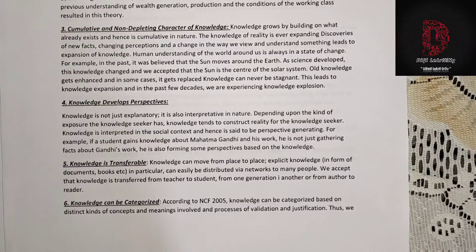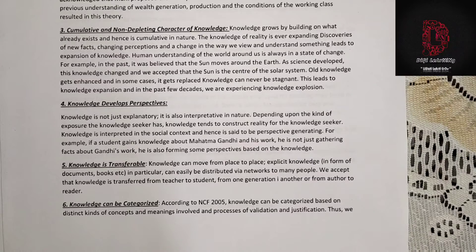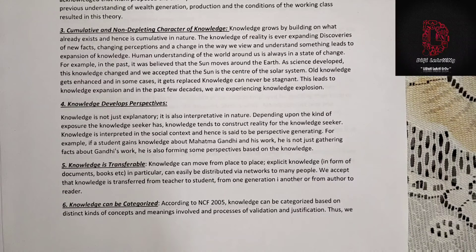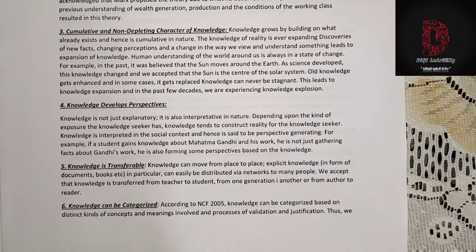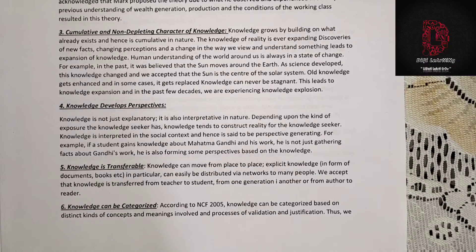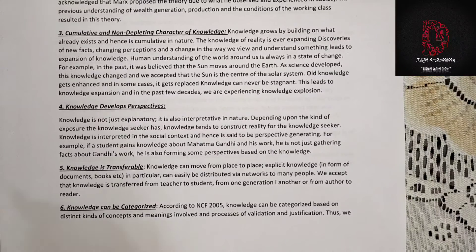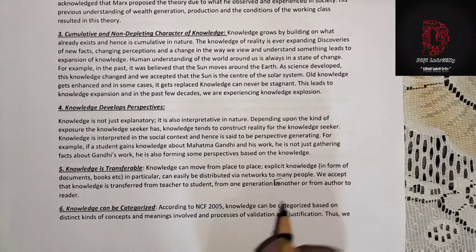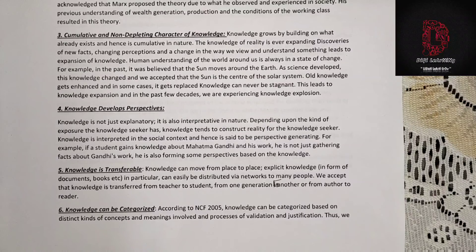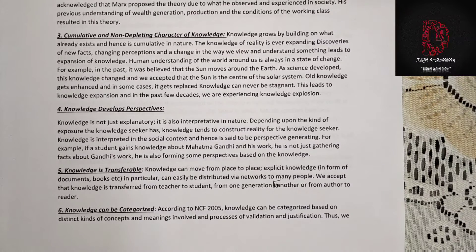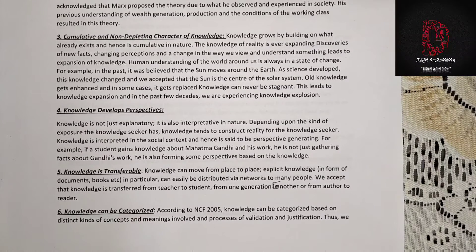The fifth characteristic is that knowledge is transferable. Knowledge can move from one place to another. Explicit knowledge in the form of documents, books, etc. can easily be distributed via networks to many people. We accept that knowledge is transferred from teachers to students, from one generation to another, or from author to reader.